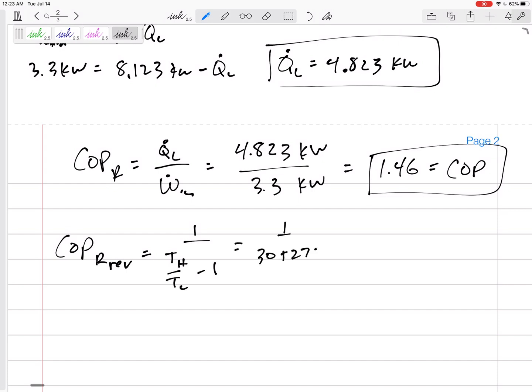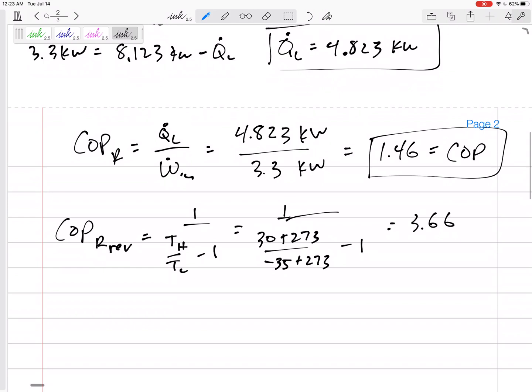1 over TH is 30 plus 273, negative 35 plus 273, minus 1. The best possible coefficient of performance: 3.66. You see, compared to the 1.46 that we actually have. And I know that COP is also equal to QL over...